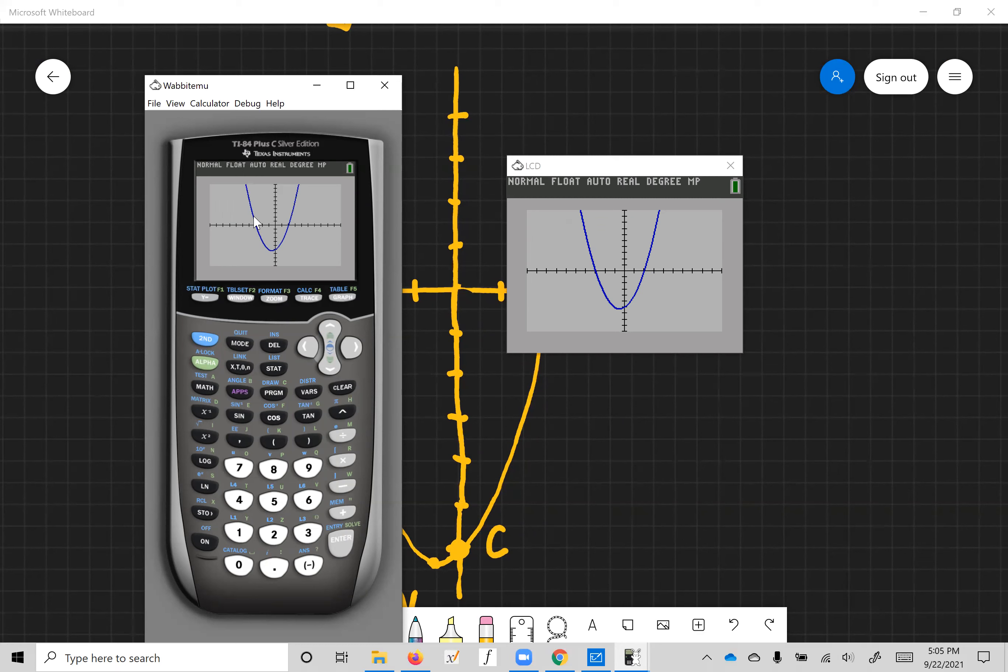Let's find these zeros on the calculator just to verify what we have, and then let's find the vertex. So to find the zeros, we need to use calc right here, CALC. It's in blue, so second calc, and then let's find the zero. So that's number two.